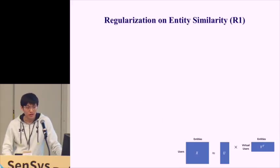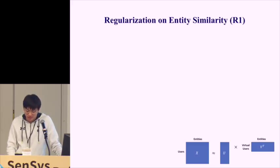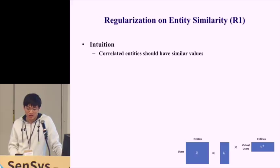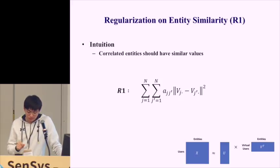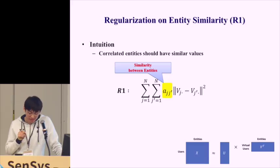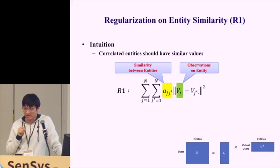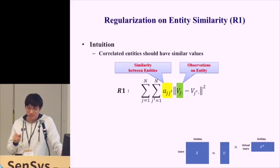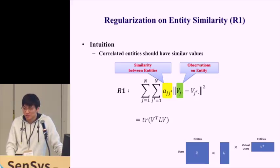To further regularize the optimization problem, we incorporate entity similarity. The intuition is that correlated or similar entities should have similar values. We introduce a term where A_jj' represents the similarity degree between two entities, and V_j represents the observations on entity j. This term enforces that if two entities are more similar — meaning A_jj' is larger — their observations should be similar as well. This regularization term can be transformed into matrix form for later use.